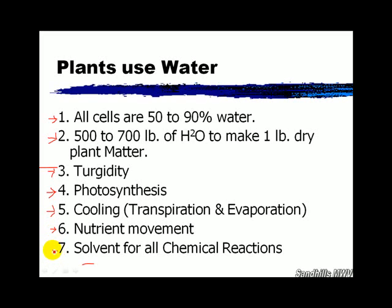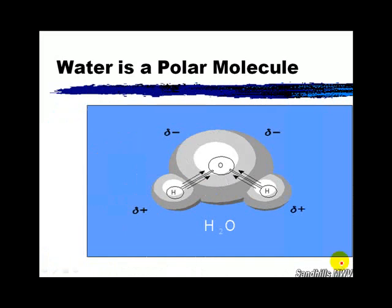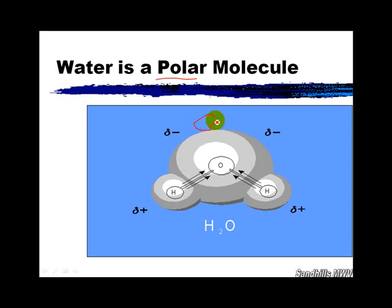Water is the universal solvent for all chemical reactions. Very important to remember: water is a polar molecule, meaning it has charges. The OH on one side is a negative, and the H⁺ is a cation — that's what we measure with pH. If you go back to your chemistry review from the first section of this course, you will understand how water works as a magnet, and it can pull salts and compounds apart, which makes it a wonderful solvent.